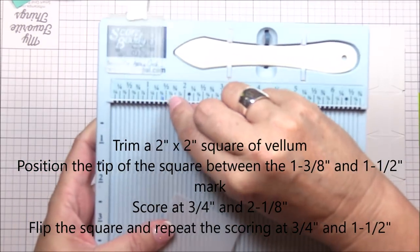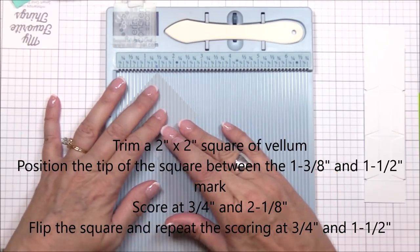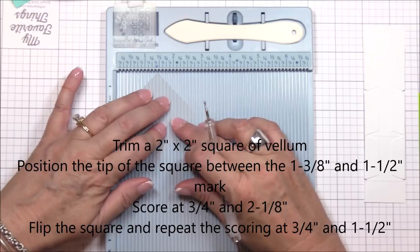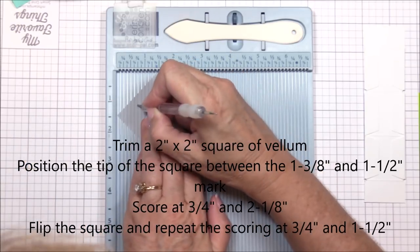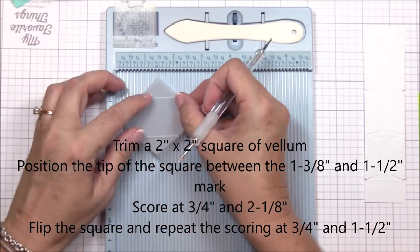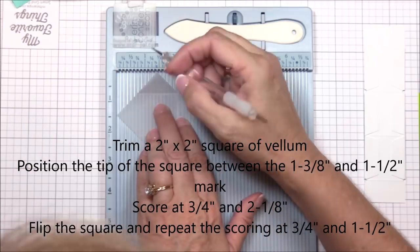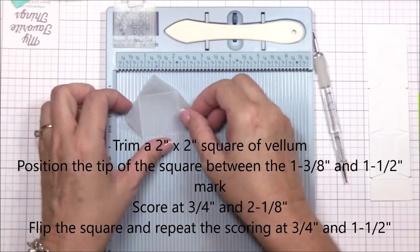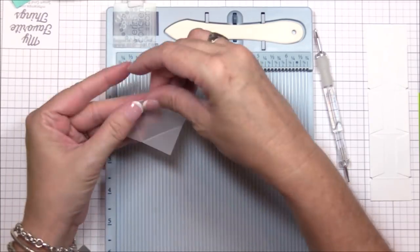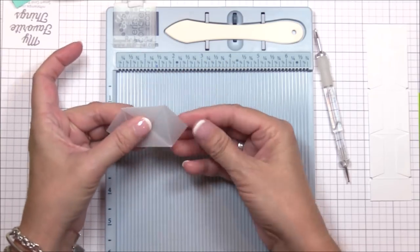I've trimmed a two-inch square vellum and I'm placing the points of the square between the one and three-eighths inch and one and a half inch mark on my scoreboard. I'm scoring the vellum at three-quarter inches and two and an eighth inches and then I'll flip the square and repeat the score marks so that a perfect square is scored in the middle. Then I'll fold on the score lines bringing the points of the square into the center.